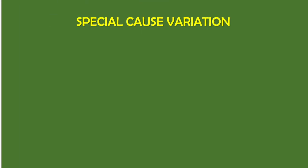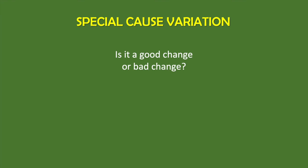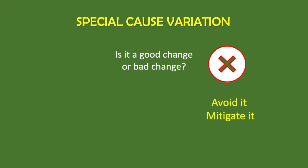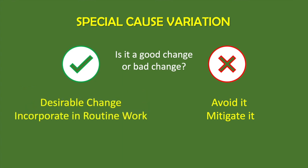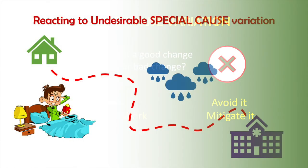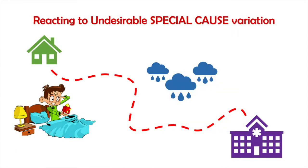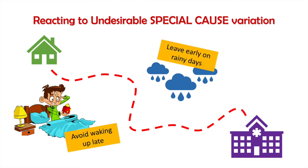Reaction to special cause variation is different. The question here is: did the special cause produce better results or worse results than usual? If the results are worse, then get rid of the factors producing this special cause. If the results are better, then learn from the special cause and see if such a change can be made a part of the usual system for consistently better results. In the case of driving, our reaction to the undesirable special cause would be to avoid it or prepare for it — so this would mean avoid waking up late, and anticipate rainy days and leave early on those days.